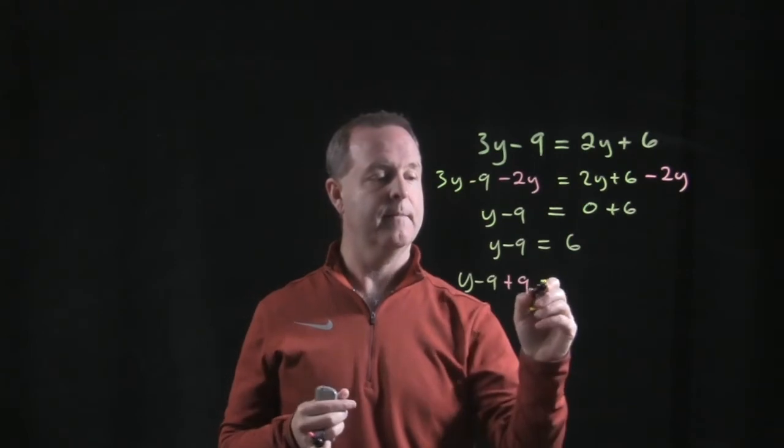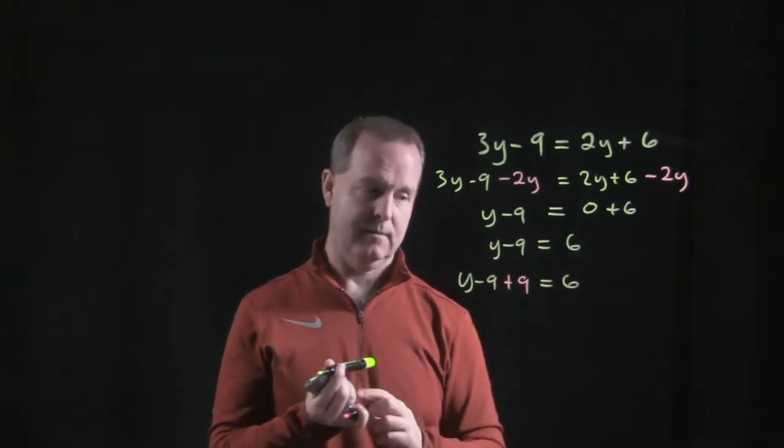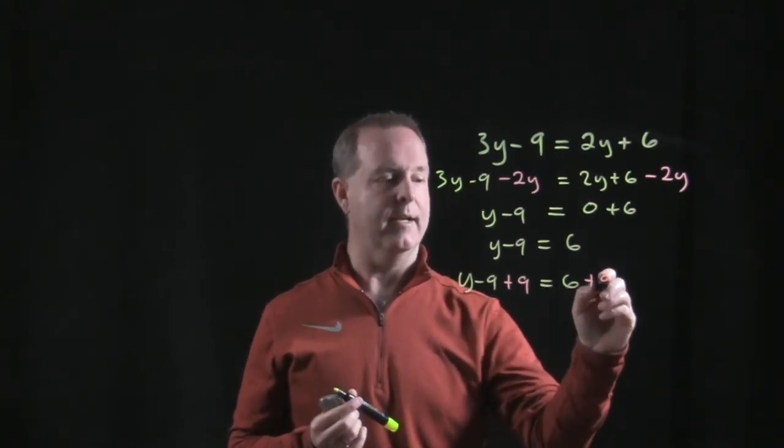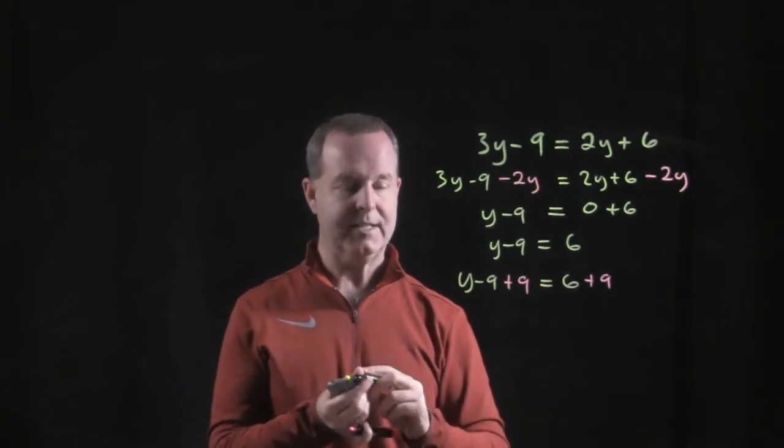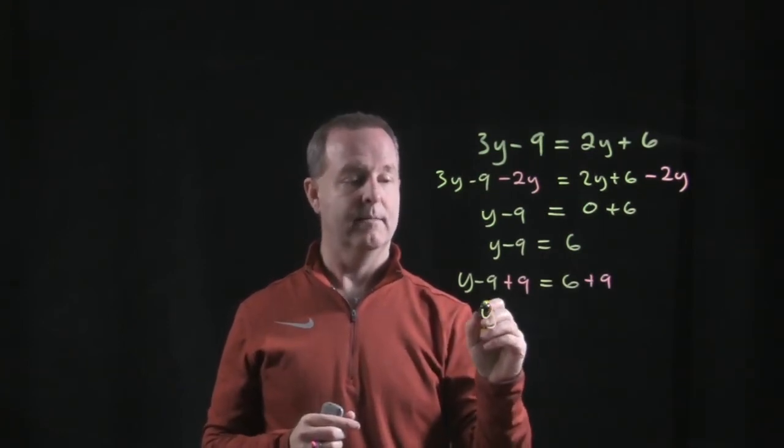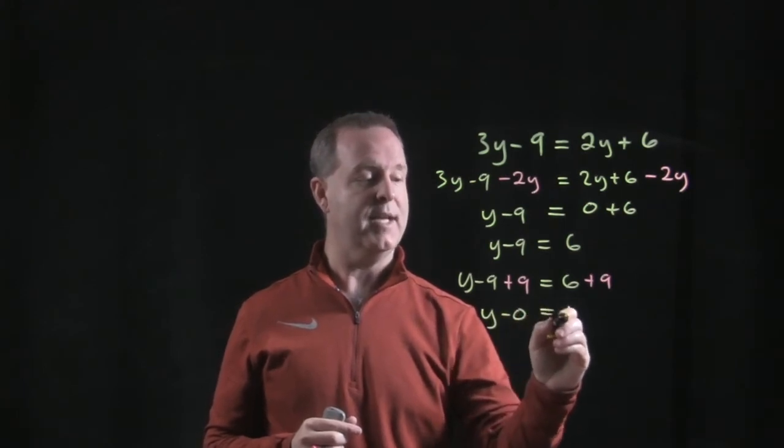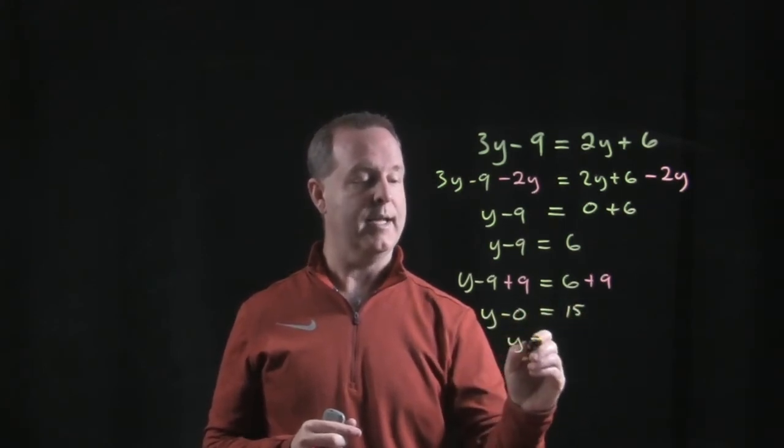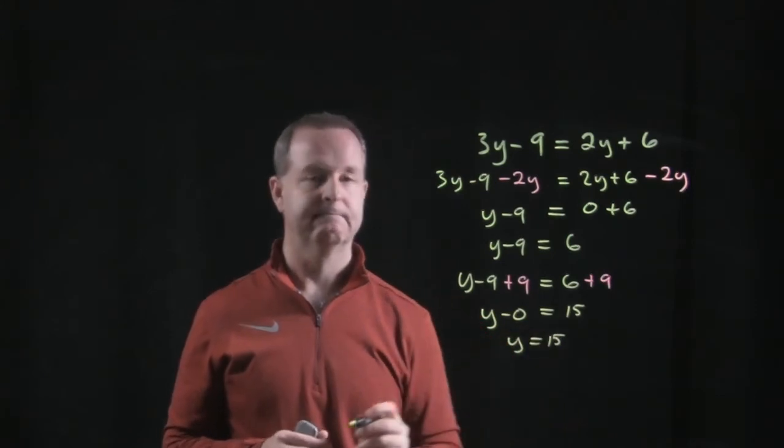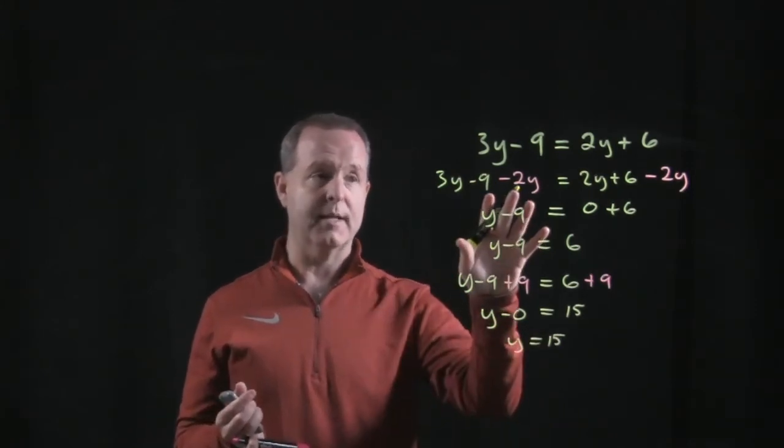And then on the right side, to maintain our balance, we also have to add that 9. So on the left side I now have y minus 0, and on the right, 6 plus 9 equals 15. Y equals 15.